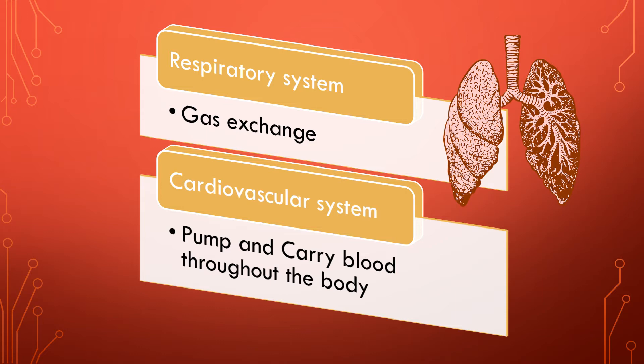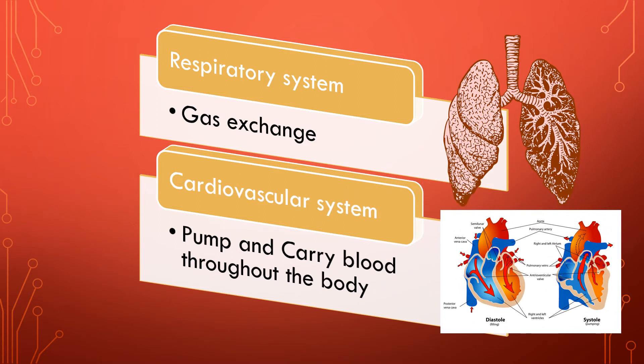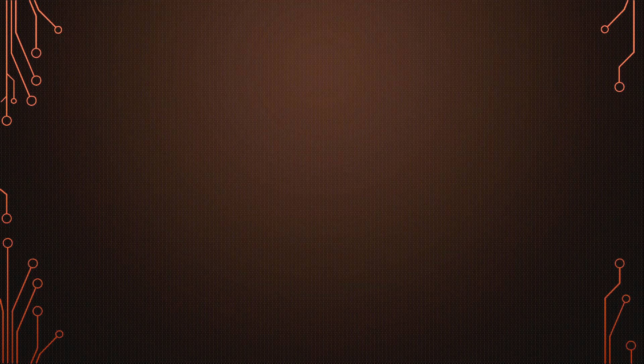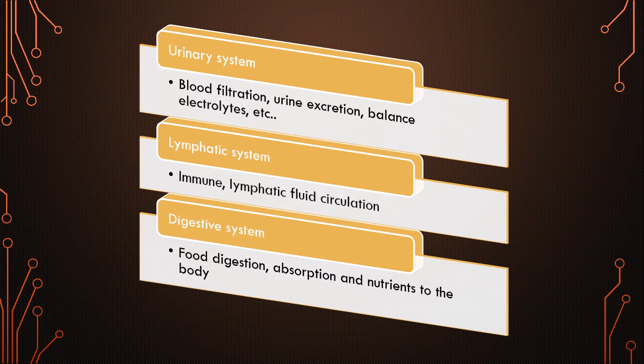And the cardiovascular system, which is made of the heart and the blood vessels, which helps pump and circulate blood throughout the body. There is also the urinal system physiology that helps in blood filtration, urine excretion, and balancing electrolytes within the body.